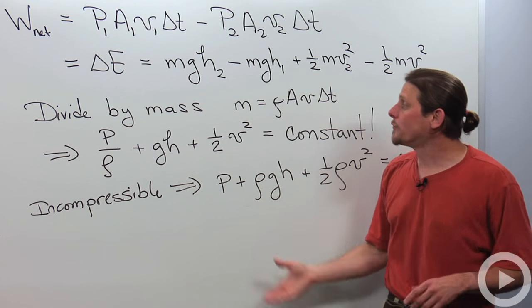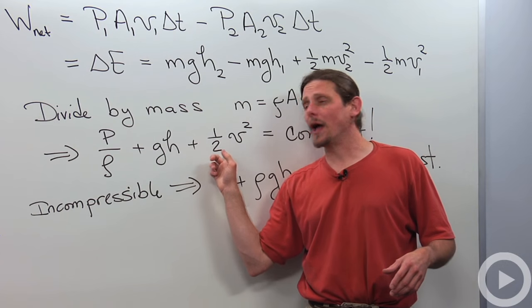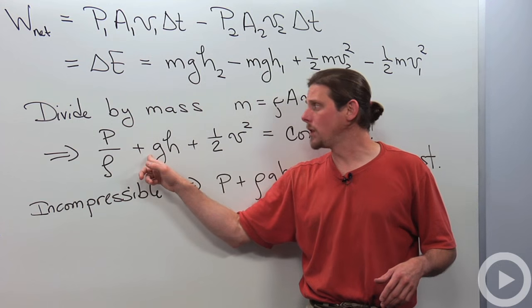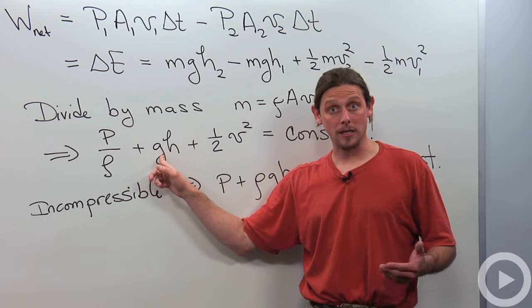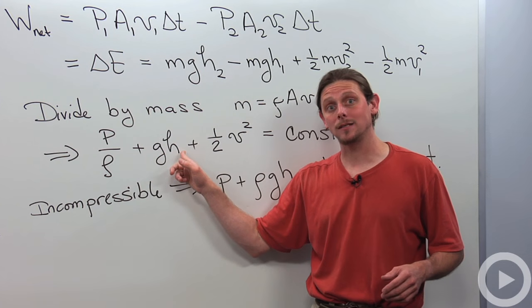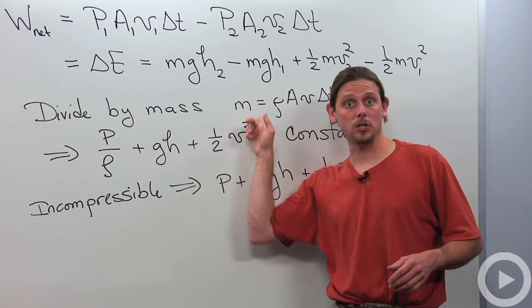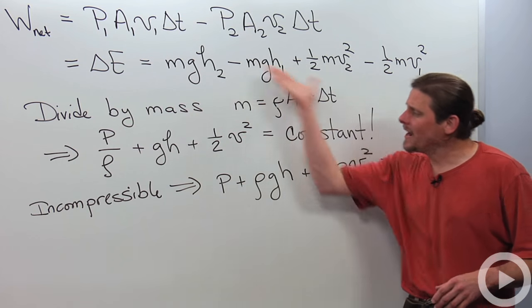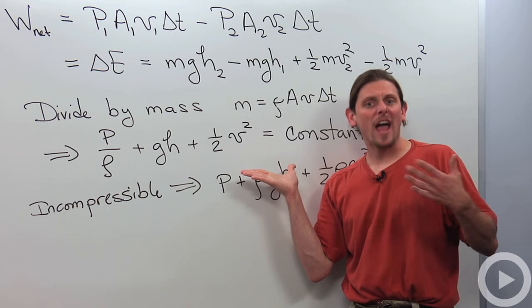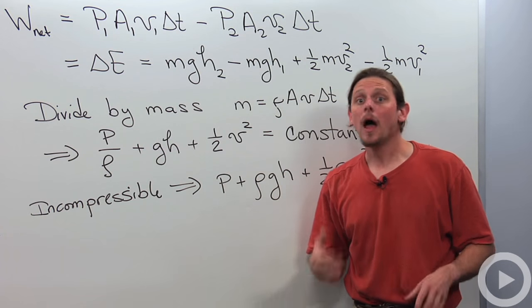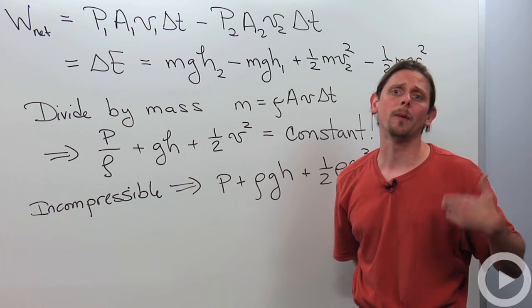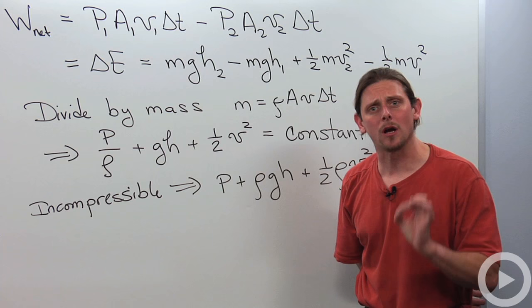If we rearrange that we'll end up with the following expression: pressure divided by density plus acceleration due to gravity times height plus 1 half speed squared has to be constant. This plays a role of energy conservation inside of a fluid. That's the nice thing about Bernoulli's principle—it allows us to think about the fluid in terms of energy conservation.